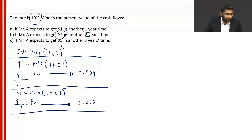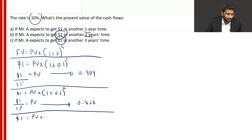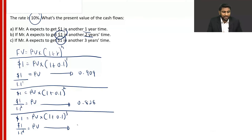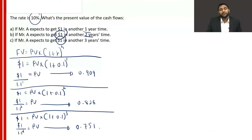Now let's do the next one. $1 is the future cash flow that you are getting — $1 in another three years' time. Then present value into 1 plus 0.1 to the power 3. So $1 divided by 1.1 to the power 3 is your present value. If you do the calculation to three decimal places, 1 divided by 1.1 to the power 3, you get a value of 0.751.